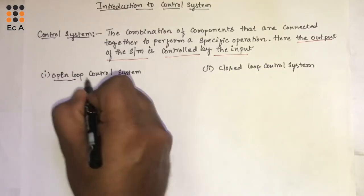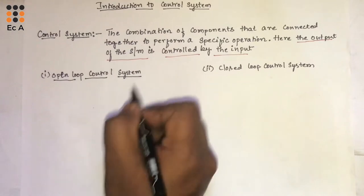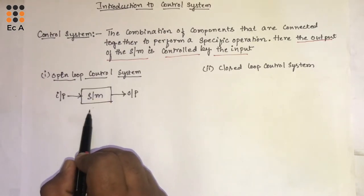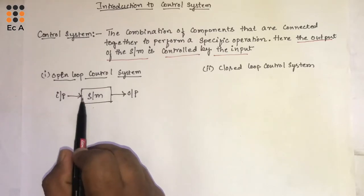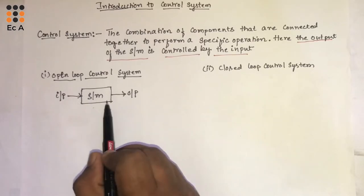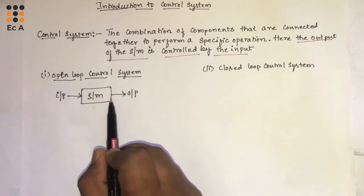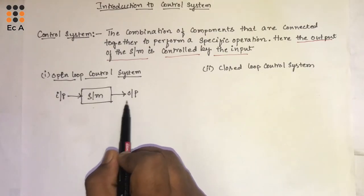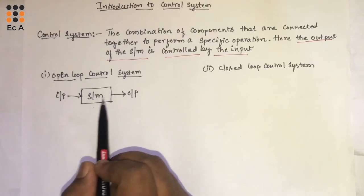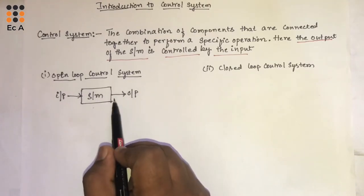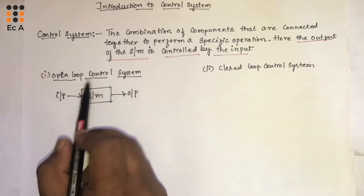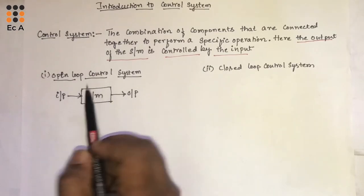This figure shows a simple representation of an open loop control system. You can see there is a system where it takes the input, processes it, and provides the output. Here, the output is not controlled or measured — that's why it is known as an open loop control system.